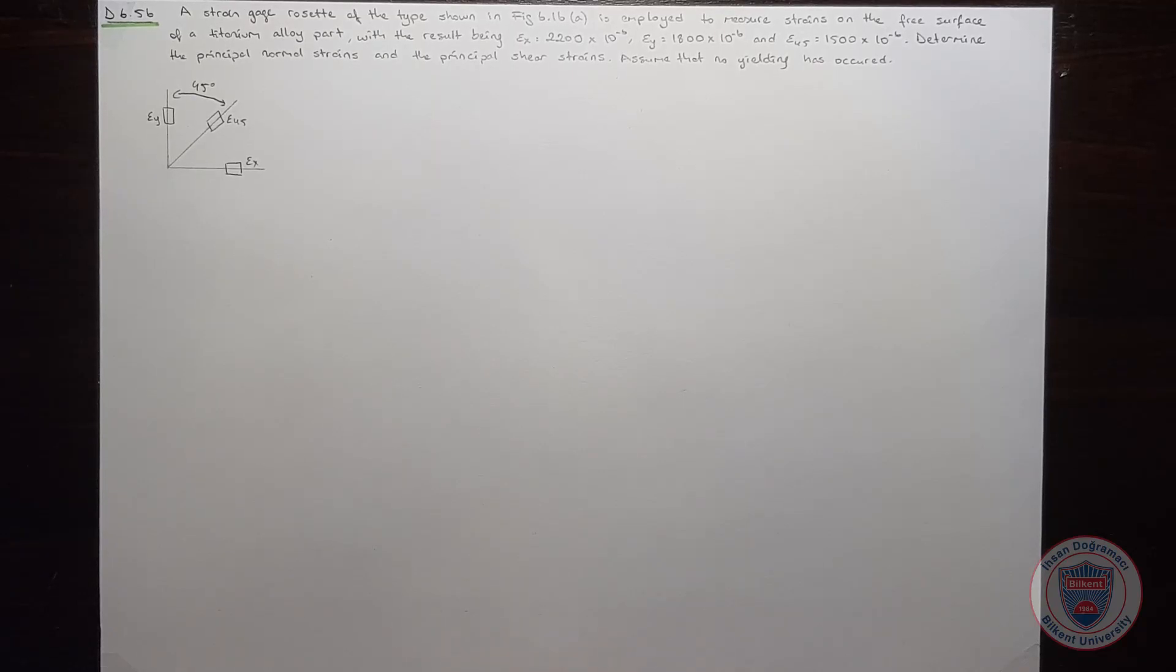A strain gauge rosette is used to measure strains on the free surface of a titanium alloy part. We know the measurement results, and our goal is to determine the principal normal strains and the principal shear strains. We will assume that no yielding has occurred.